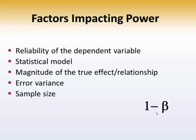Sample size — this is typically the one most people think about when they consider power. The most often asked question with a research study is how many subjects do I need, and the real question they're asking is how many subjects do I need because I need to have power. And finally, the alpha level that you select. Unfortunately, the alpha level and the beta level — the chance of making a type 1 or a type 2 error — are inversely related.